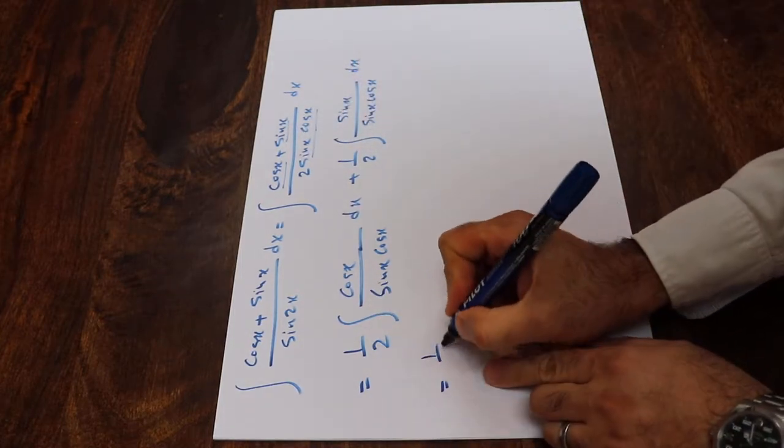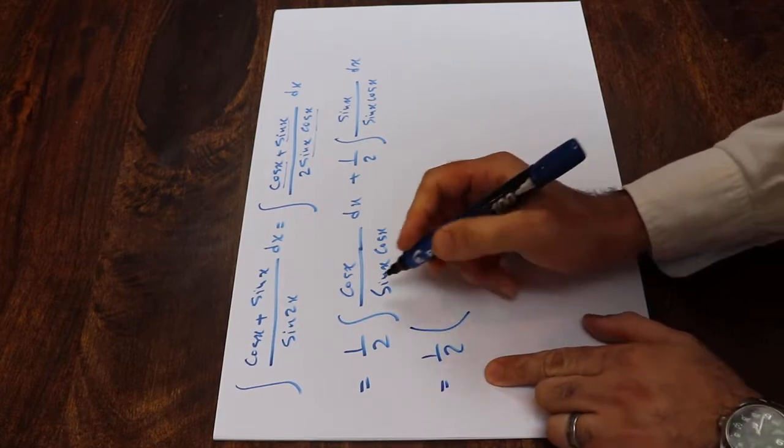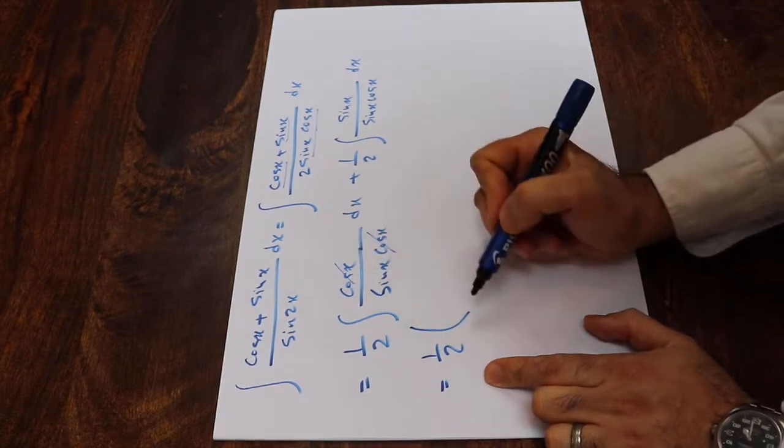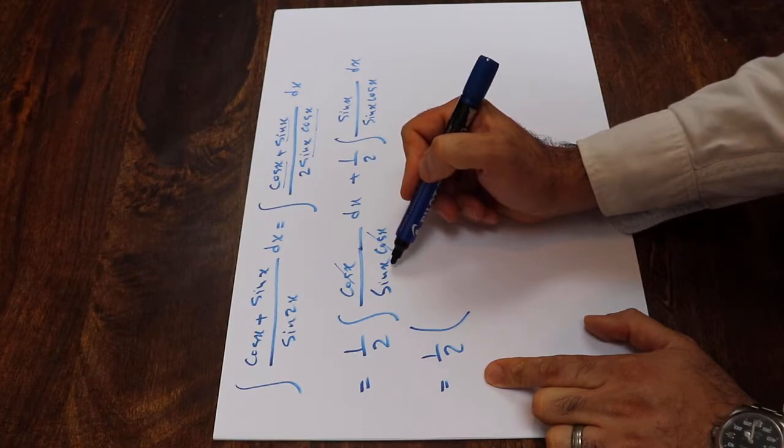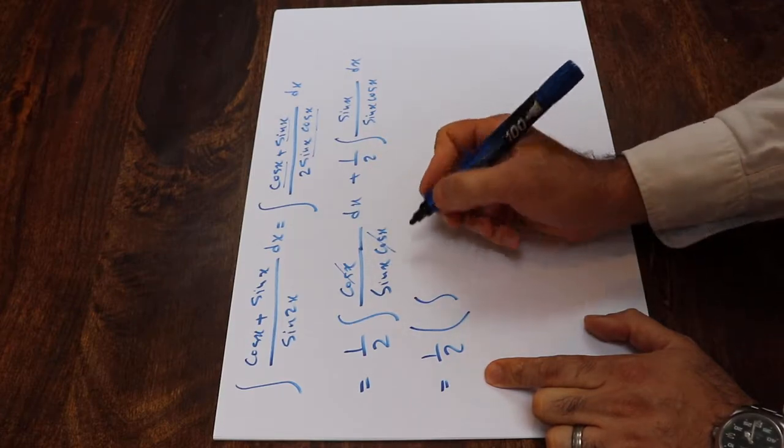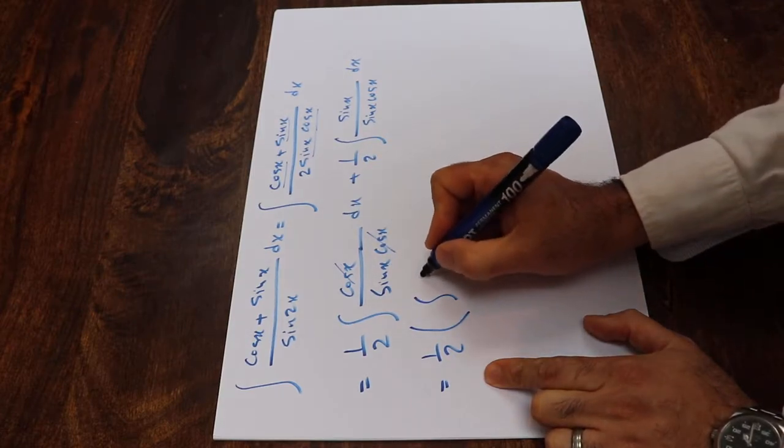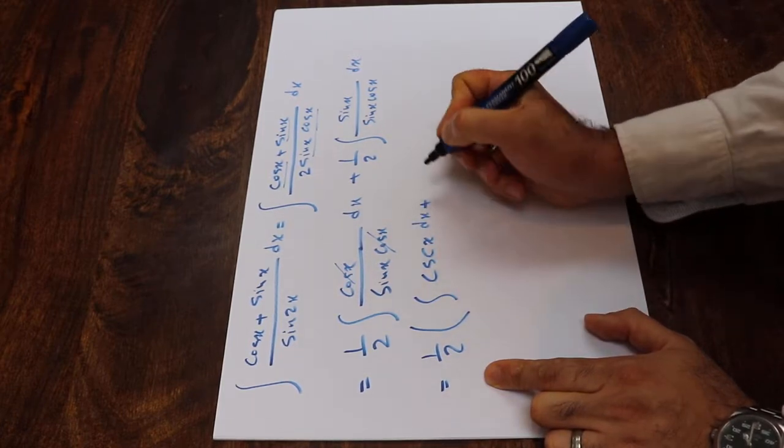That will be equal to 1 divided by 2. You can even factor that. The cosine x is out here, so 1 divided by sine x, we know that is equal to the definition of the cosecant x. So that will be cosecant x dx plus,